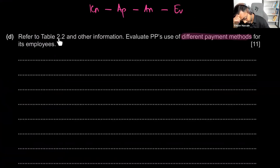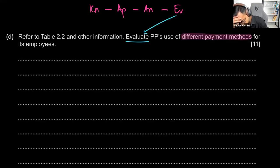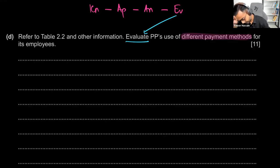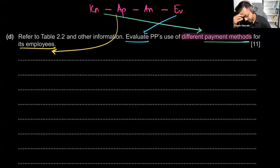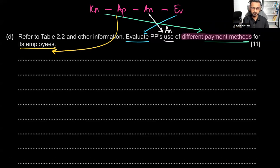Evaluate PP's use of different payment methods for its employees. Knowledge is payment methods, which falls under motivation. Application is talking about employees. Analysis is: does it work? Is this the right move? We've seen the table — we have to evaluate whether employees are being paid in the right way matching their main tasks. Whenever you're given a table like this, you have to talk about all four types — you can't choose; you must discuss all four.